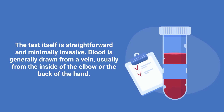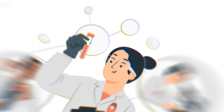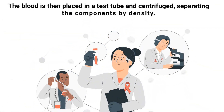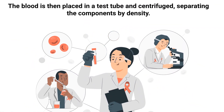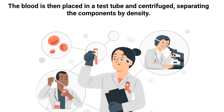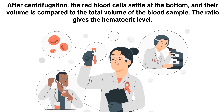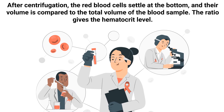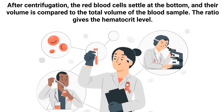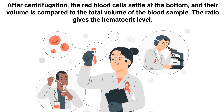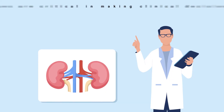The test itself is straightforward and minimally invasive. Blood is generally drawn from a vein, usually from the inside of the elbow or the back of the hand. The blood is then placed in a test tube and centrifuged, separating the components by density. After centrifugation, the red blood cells settle at the bottom and their volume is compared to the total volume of the blood sample, giving the hematocrit level.